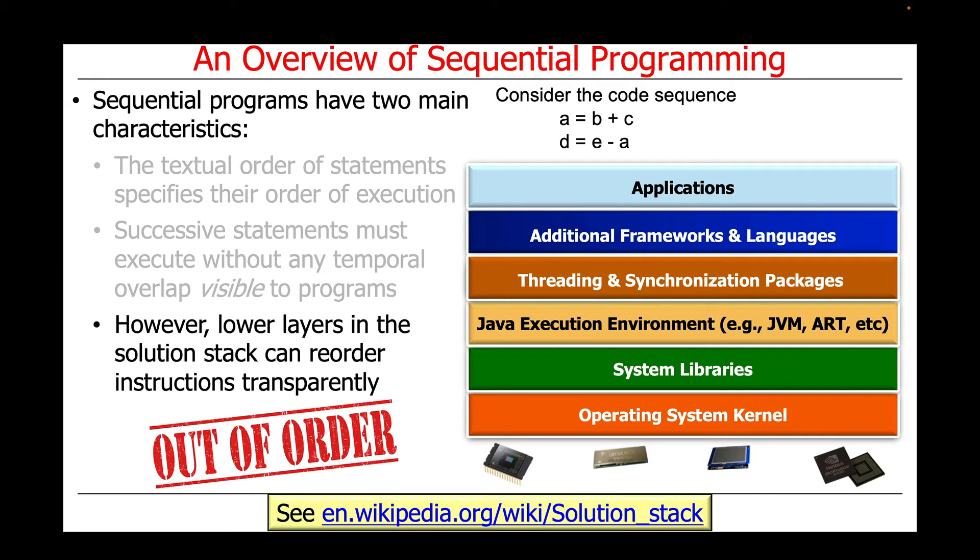In particular, it turns out that lower layers in the solution stack in the different layers from the hardware up through the OS kernel, system libraries, the JVM execution environment, and up to the application code can actually reorder instructions as long as they preserve the semantics. In this particular case, preserving semantics means that a is going to be given a value before we use a in computing the value of d.